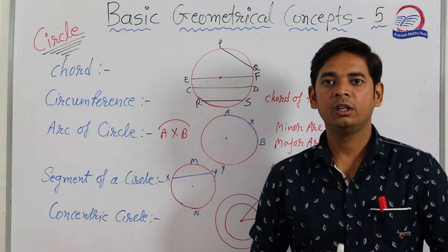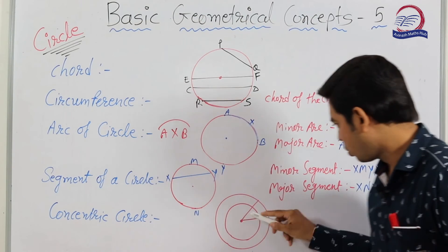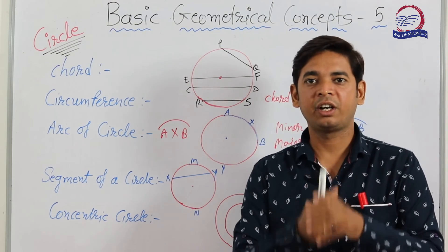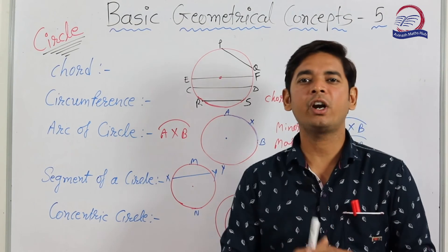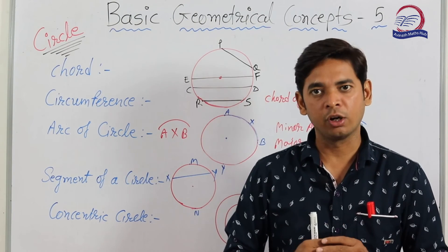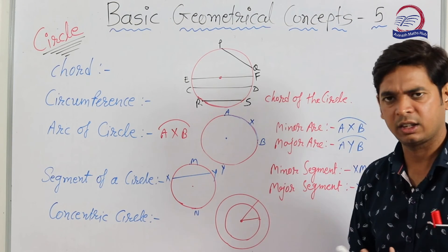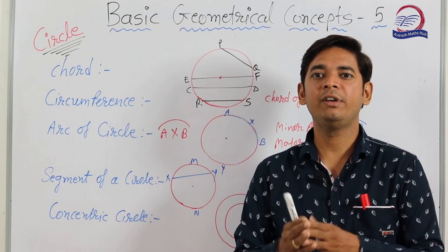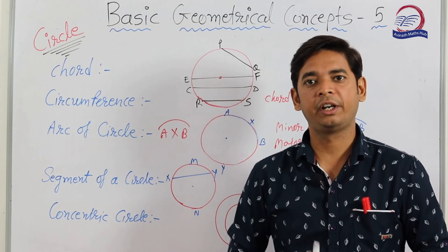Next: concentric circles. What are concentric circles? Two or more circles having the same center but different radii are called concentric circles. In this figure I have drawn two, but you can take three, four, or as many as you like.